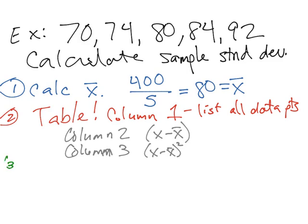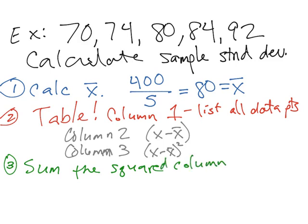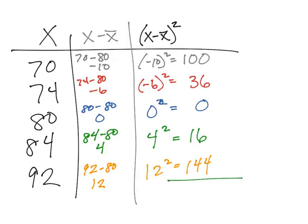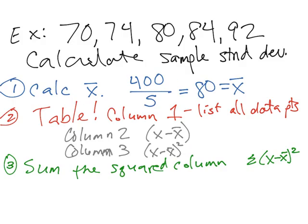Step three is to sum the squared column, which is column three. Remember, the numerator of the formula is the sum of (x minus x-bar) squared. Adding those five values: 100 plus 36 plus 0 plus 16 plus 144 gives a total of 296. So the sum of column three is 296.